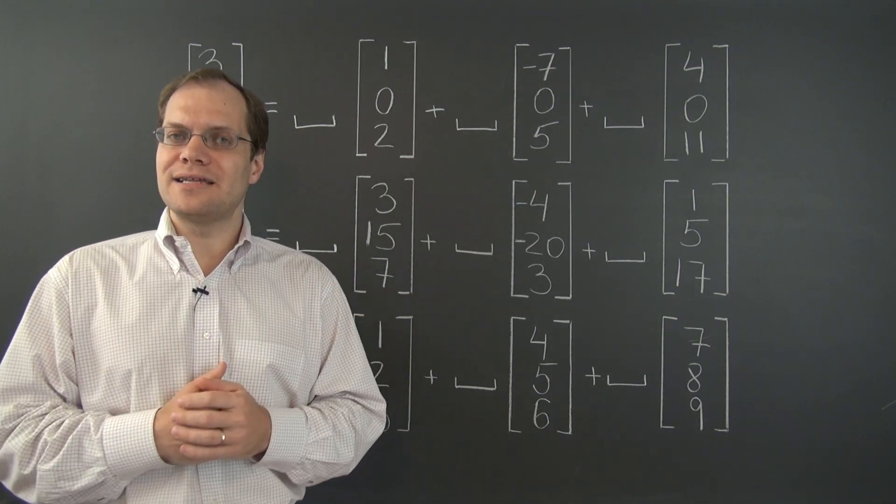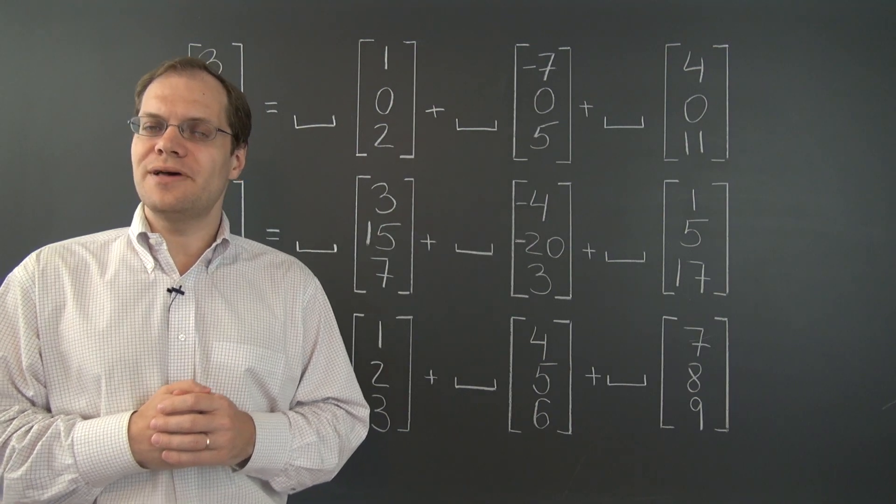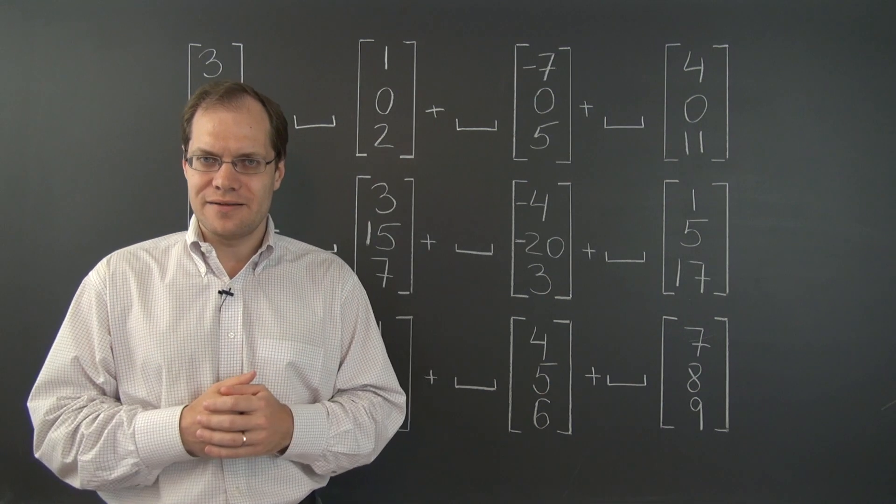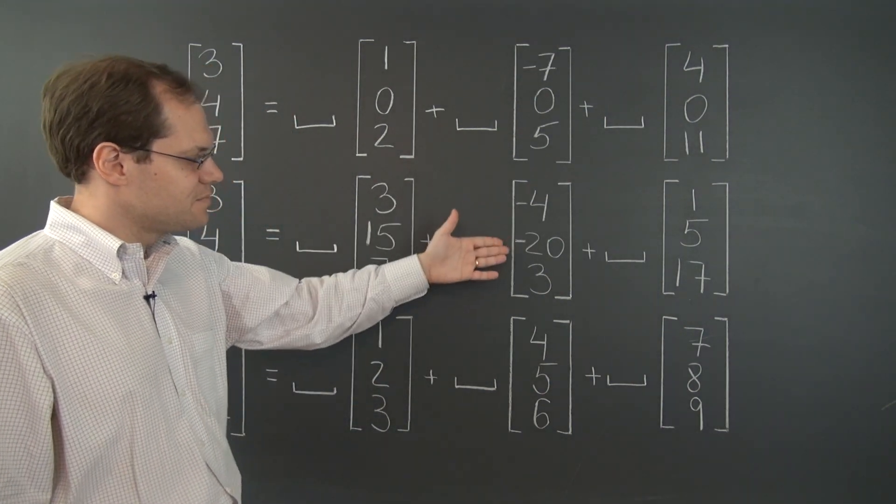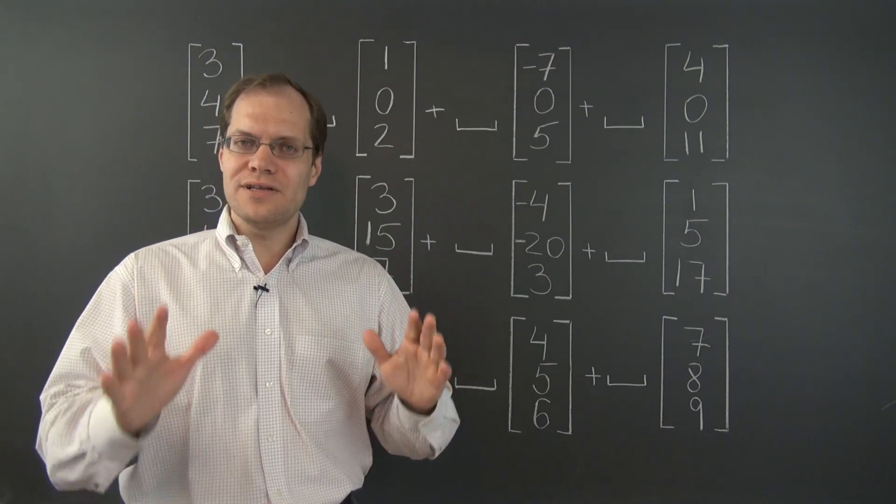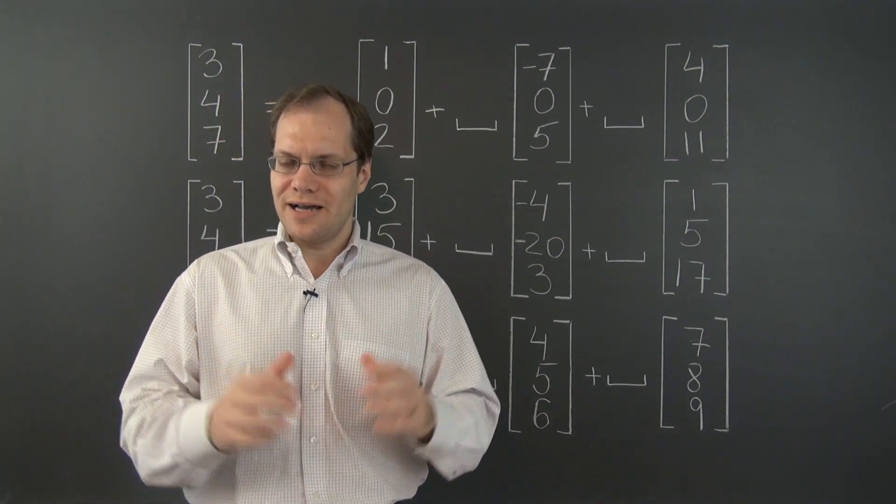So all we can talk about now is those numbers. We call them entries. So all we can refer to when discussing elements in R^n is their entries and relationships among them. That's it. Only concepts that apply naturally to R^n.